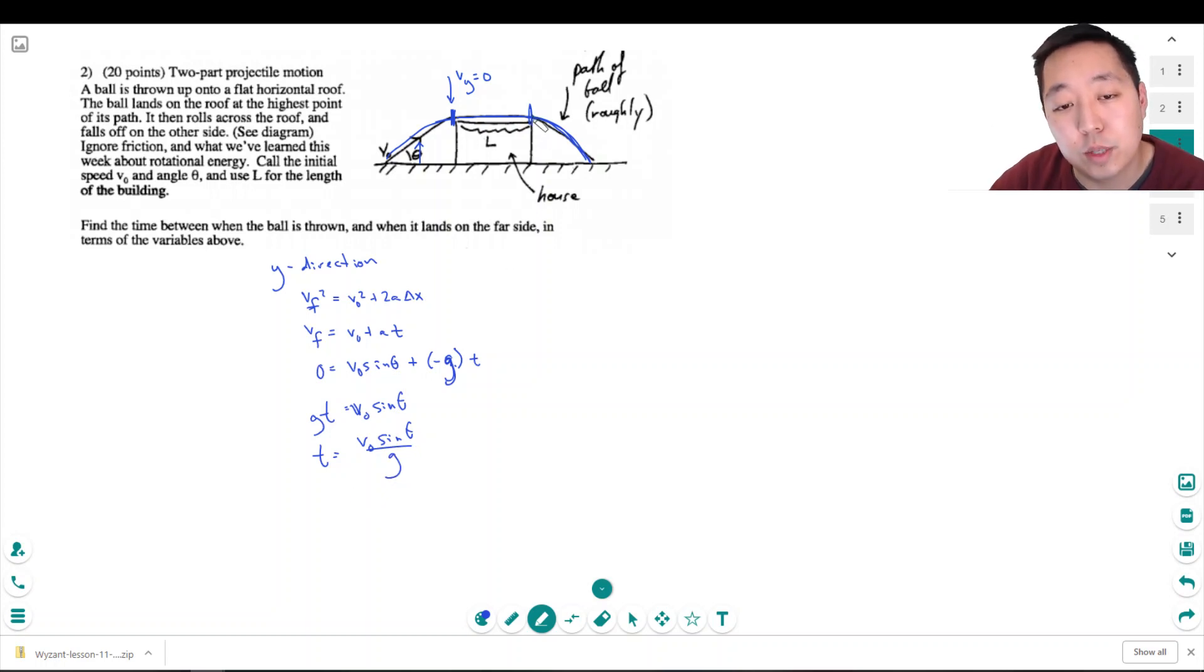Turns out the time to fall is the same because there's symmetry in here. So really, the time to fall, like the time here, is V0 sin theta over g. And this time to fall is also the same.